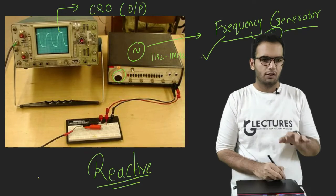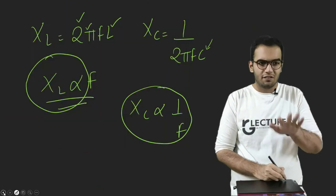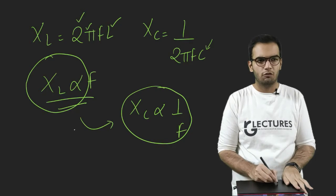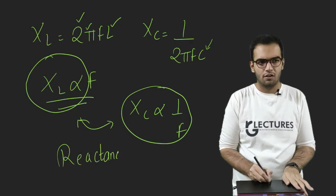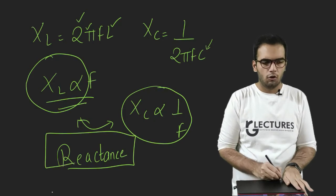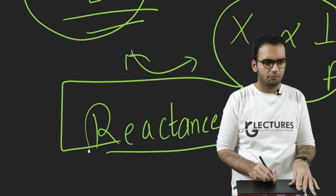So basically these types of things are called as reactive things. And that is why instead of using the word resistance, we call both of these terms as reactance. Because they react to my changes in the circuit. So I hope the concept of reactance is clear.